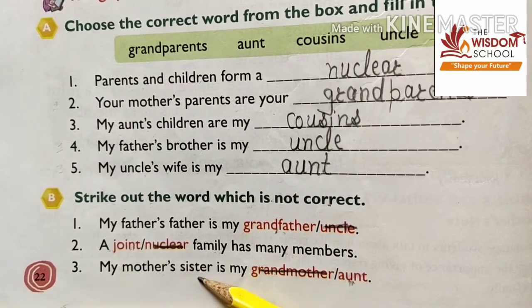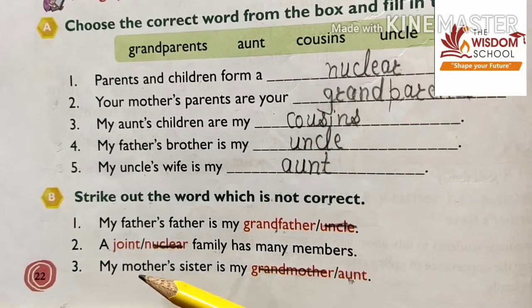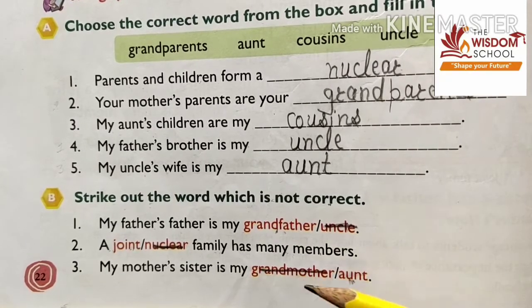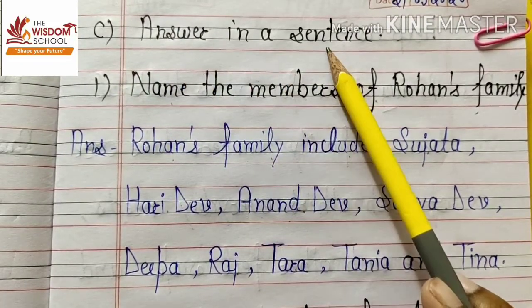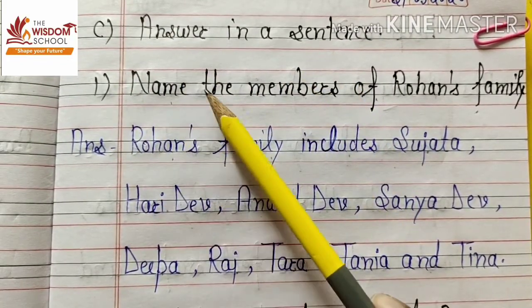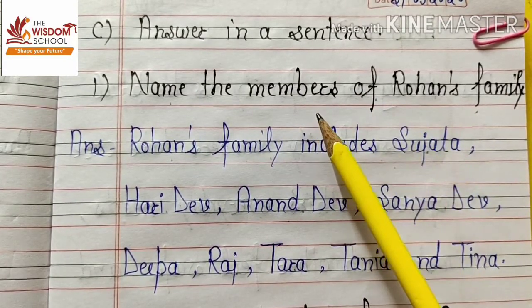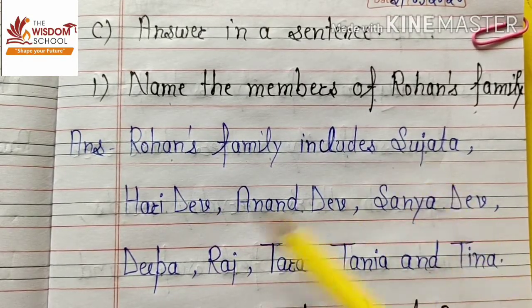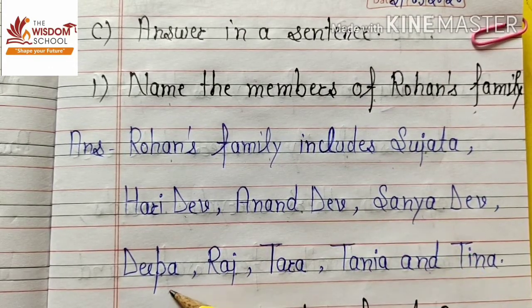Third one: my mother's sister is my grandmother's aunt — you will cut grandmother's aunt. That is the wrong word to strike out.